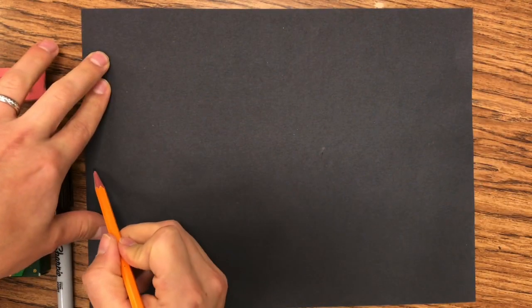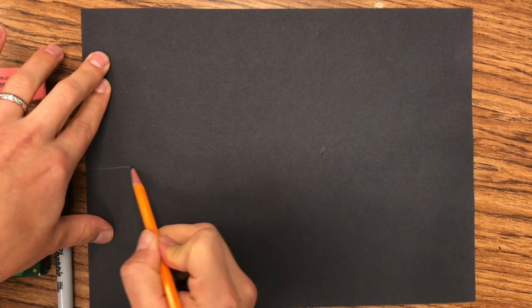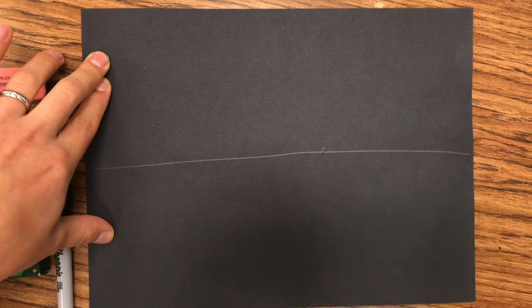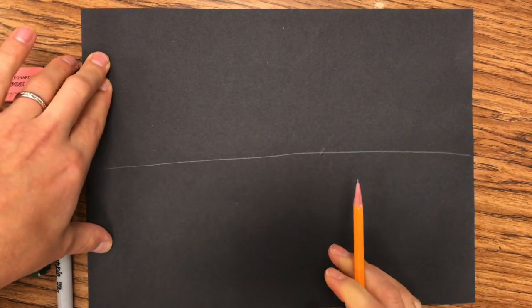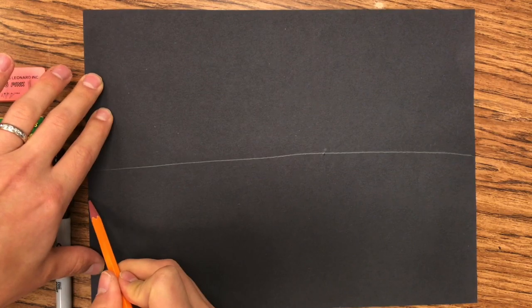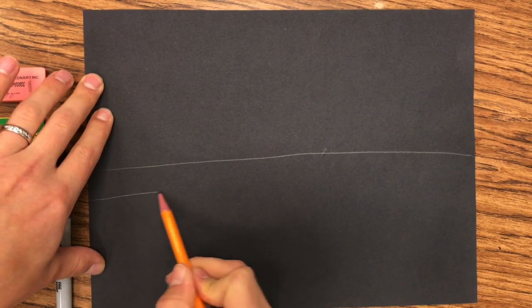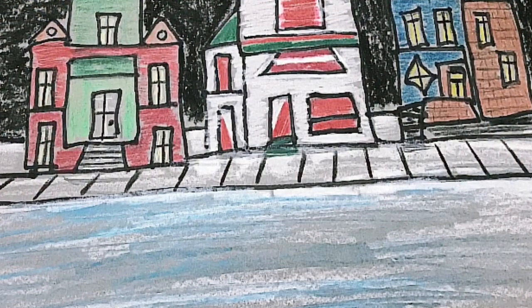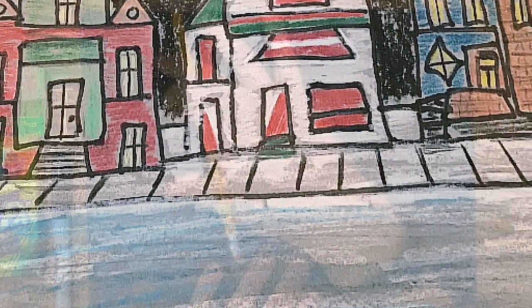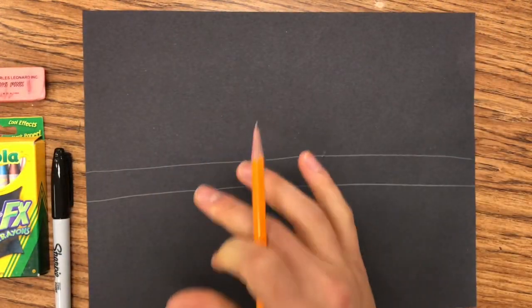On the bottom, almost like a horizon line, I want you to put a line right down the middle. Doesn't have to be perfect. Followed by that line, I'm gonna have another one really close, and that's actually gonna be our sidewalk. That's gonna be like where our village is kind of set on.